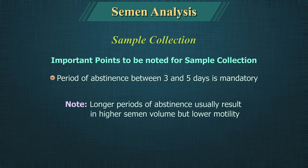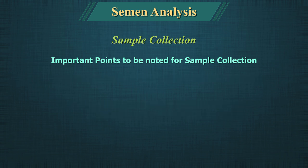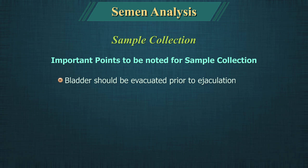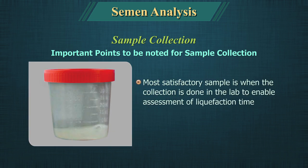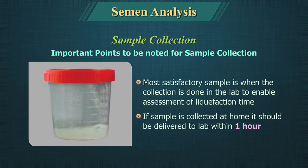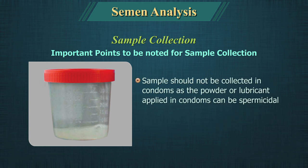Longer periods of abstinence usually result in higher semen volume but lower motility. The bladder should be evacuated prior to ejaculation. A post-ejaculation urine sample must also be collected if retrograde ejaculation is suspected. The most satisfactory sample is when collection is done in the lab to enable assessment of liquefaction time. If the sample is collected at home, it should be delivered to the lab within 1 hour.